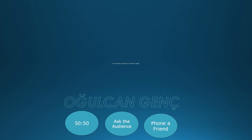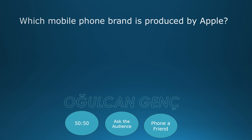Which mobile phone brand is produced by Apple? Options: iPhone, iMac, iPod. Final answer: iPhone, option A. Correct answer is iPhone.